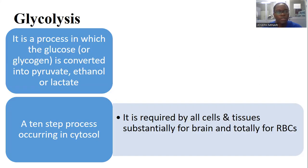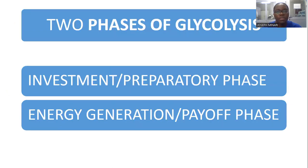Glycolysis is the process in which glucose is converted to pyruvate. In the absence of oxygen, we have a conversion of pyruvate to ethanol or lactate. This process happens in 10 steps in the cytosol. Glucose is needed by the cells and tissues, and substantially it is needed by the brain and the red blood cells as well.